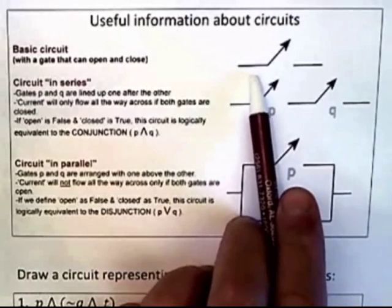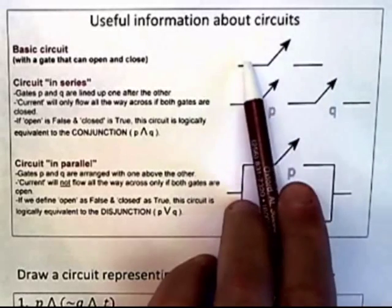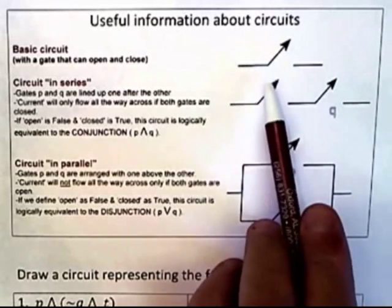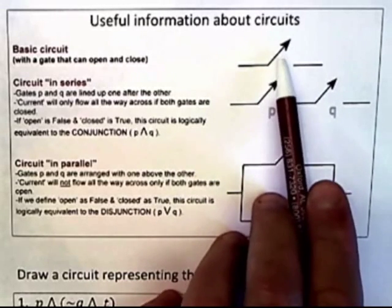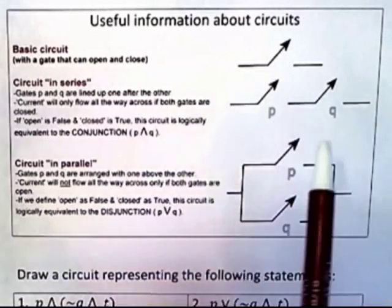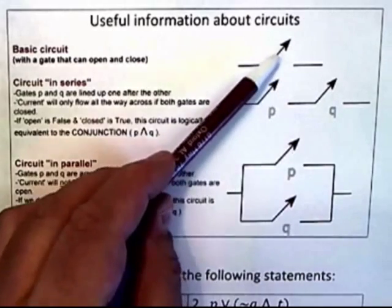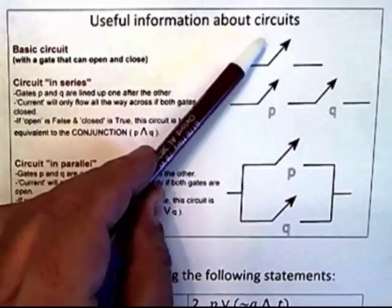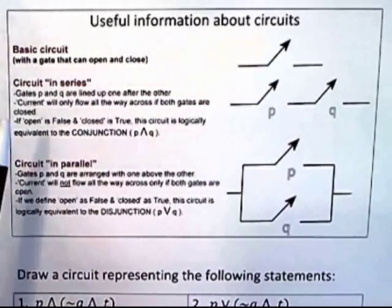A circuit is represented by a drawing like this. It's a gate and it's drawn as if the gate is open, but the gate can either be opened or closed.